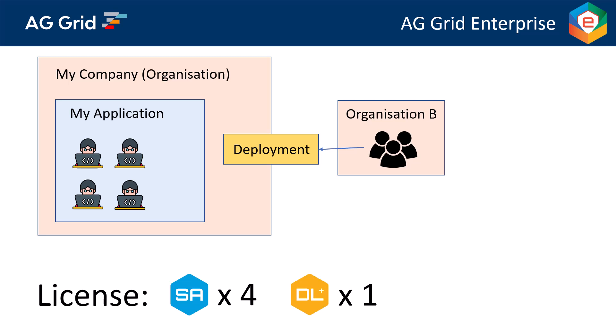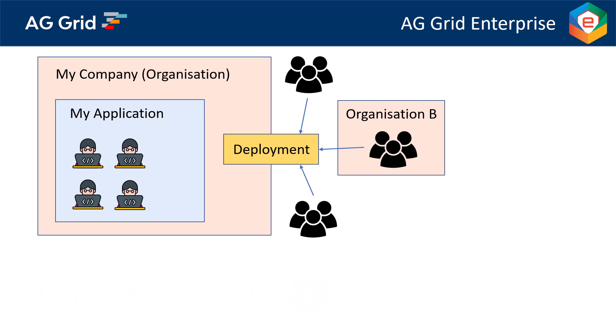Each individual production deployment requires one deployment license. If Software as a Service (SaaS) is provided, then there is one deployment instance — that's one deployment license. For example, if a bank is providing trading software accessible by multiple clients and all clients are accessing just one production instance, then that's just one deployment license.